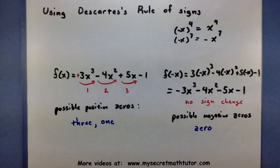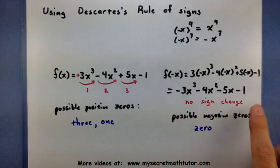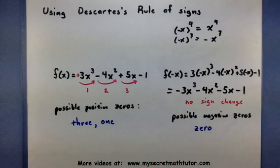So remember, when using Descartes' rule of signs, the number of sign changes in the original give you information about the possible positive zeros. And there you go. If you'd like to see some more videos, please visit MySecretMathTutor.com. Thank you.